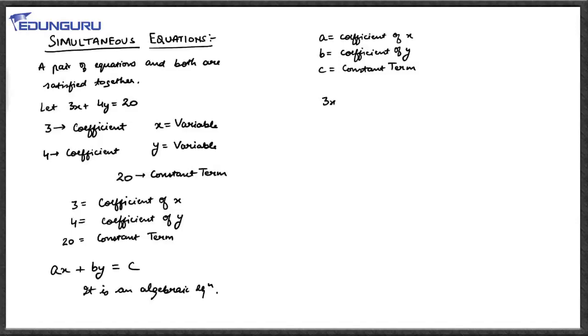When it comes to simultaneous equations, as I emphasize on the word 'simultaneous,' there must be another equation — simultaneous means together. So let me write another one. I have already written 3x plus 4y is equal to 20. Let me write another: 5x minus 2y is equal to 40. This is another equation again with two variables x and y, with their respective coefficients and a constant.